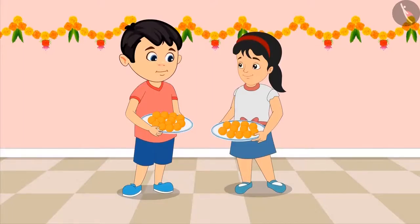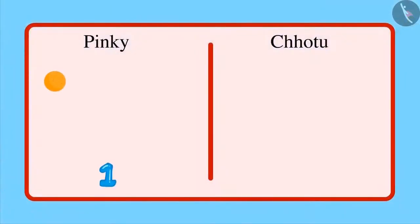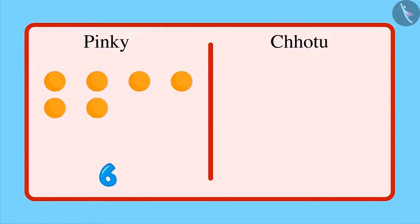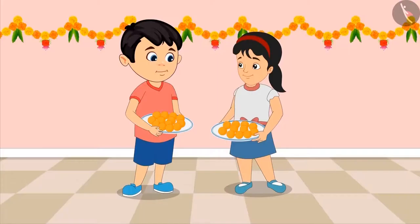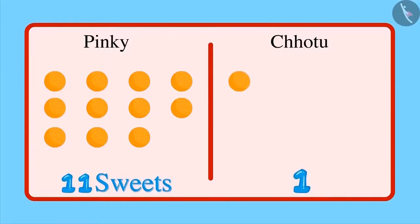Chotu, let us see whose plate has the most sweets. Okay Pinky, first let us count the number of sweets in your plate. Okay Chotu, 1, 2, 3, 4, 5, 6, 7, 8, 9, 10 and 11. There are 11 sweets in your plate.